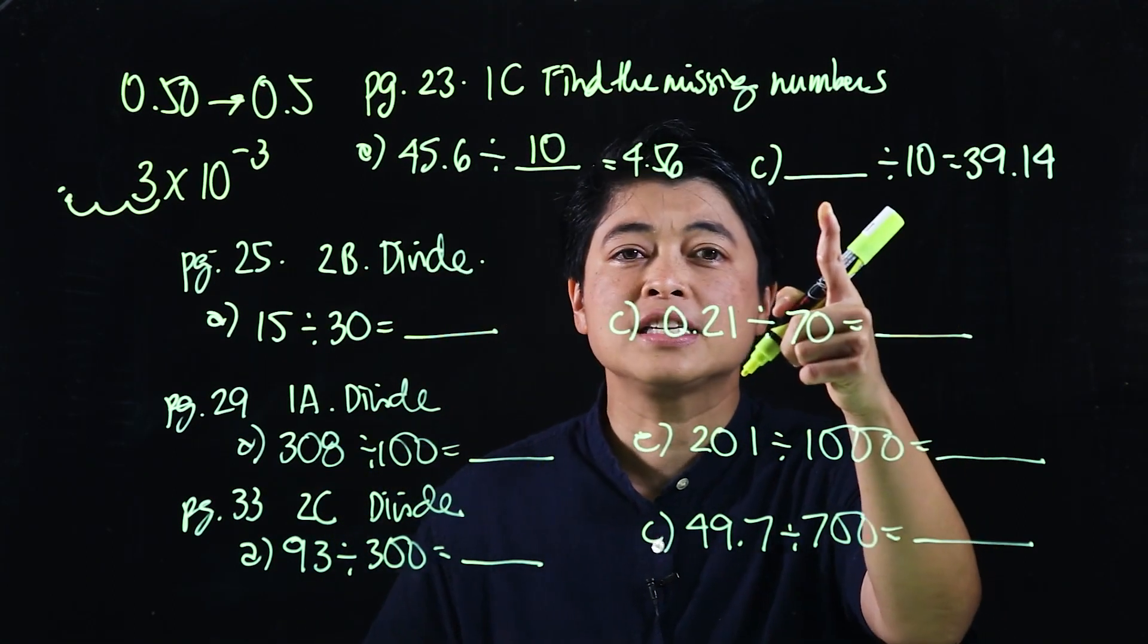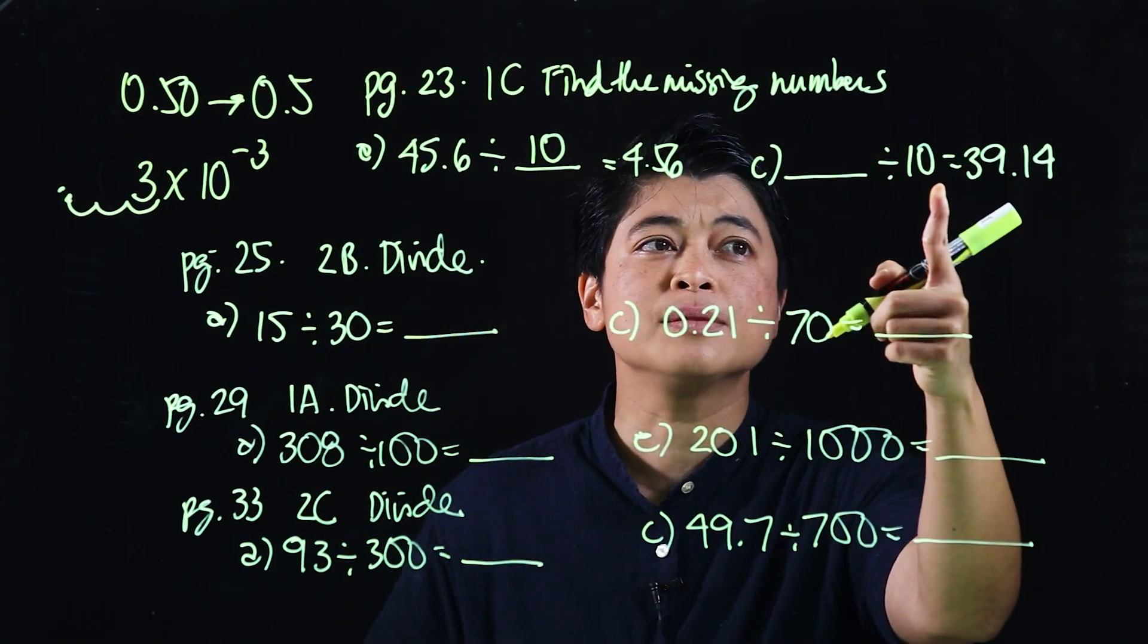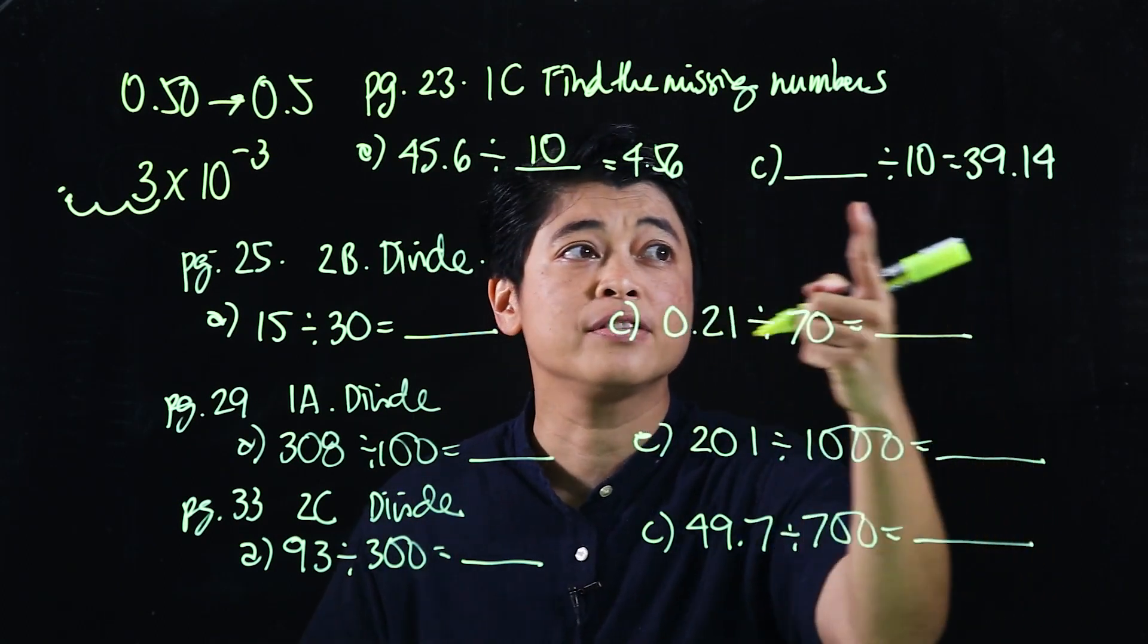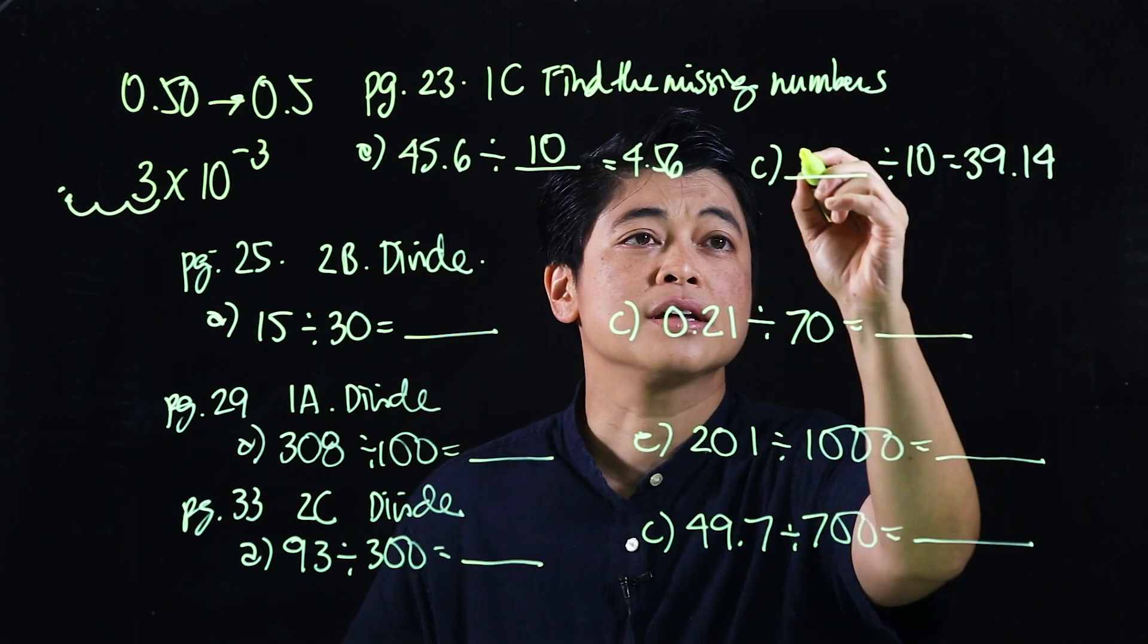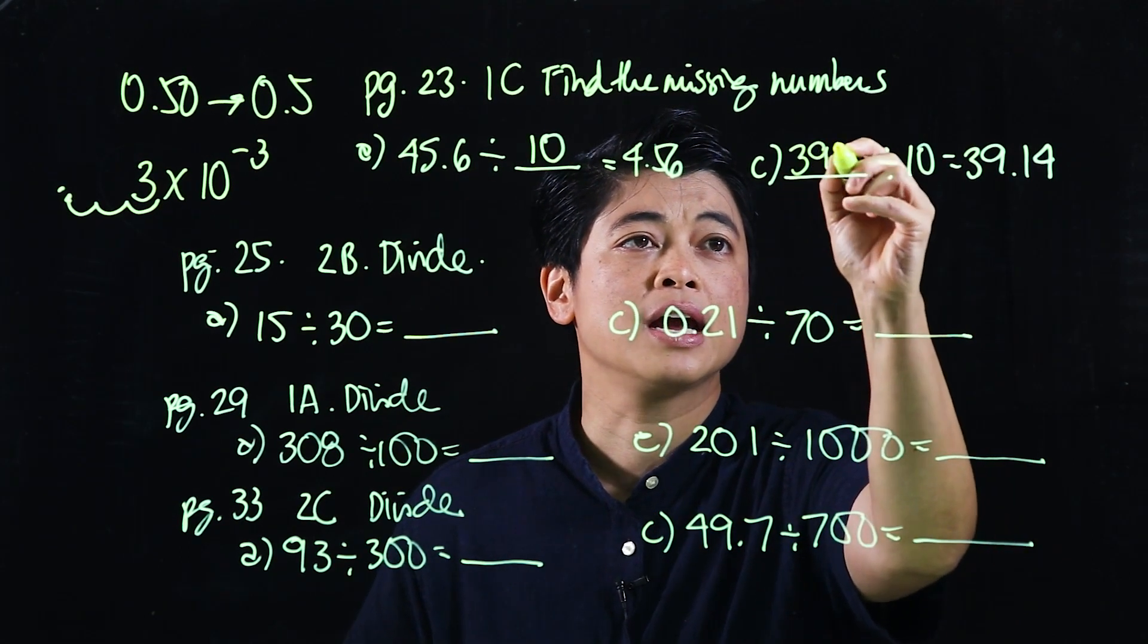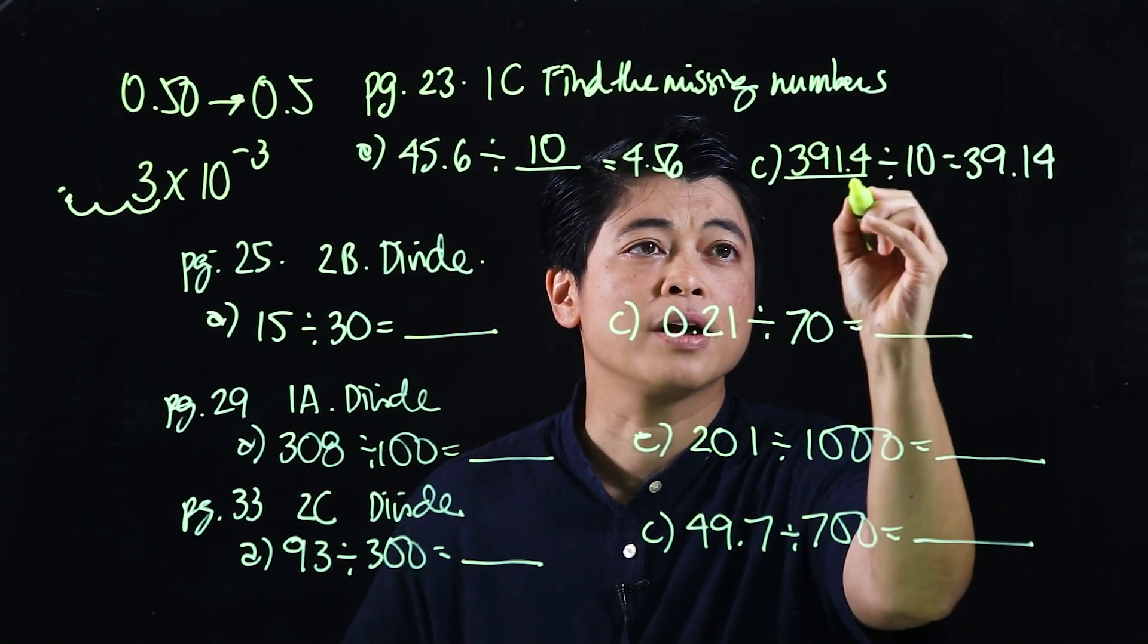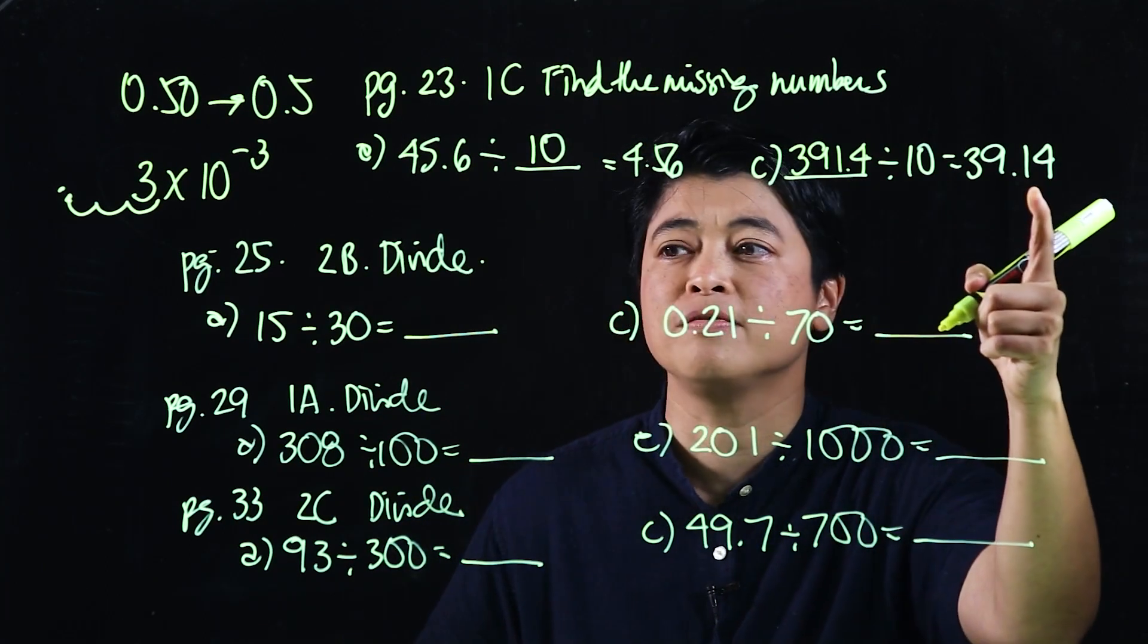Okay, here, it's looking for a number that when I move the decimal place one place to the left, will give me 39.14. So that means that would be 391.4. If I move one place to the left, will give me this.